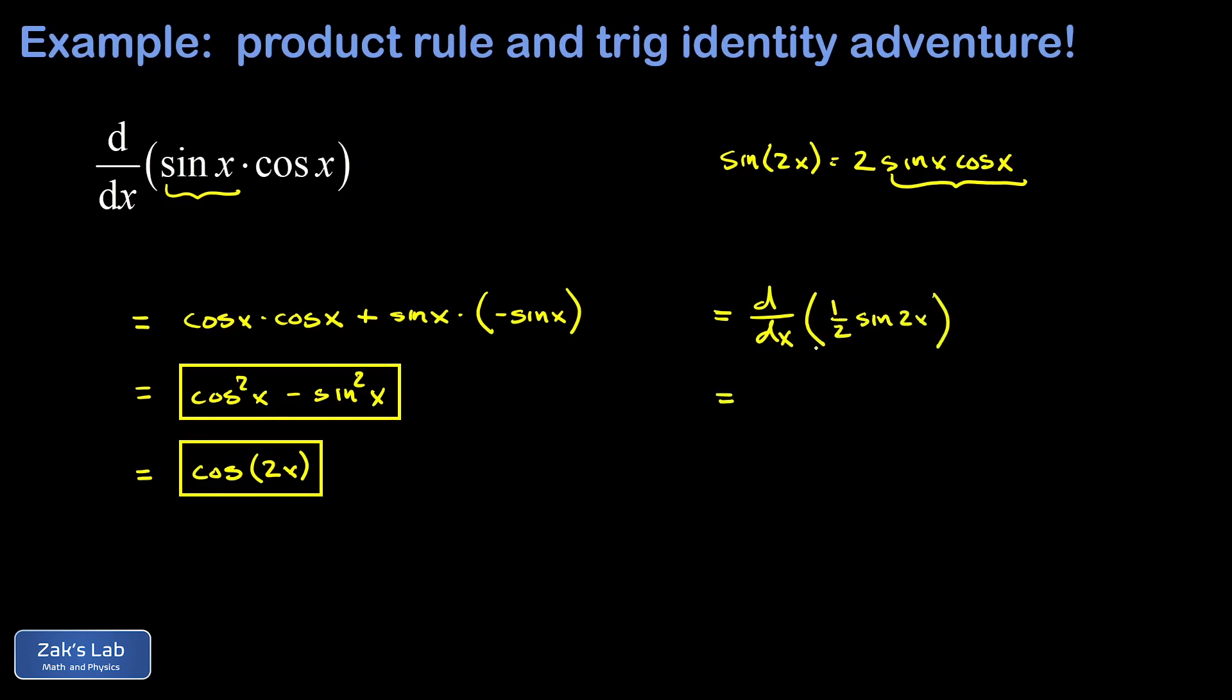Now the derivative sees right past that constant multiple of one half we'll just keep that out in front and then I have the derivative of sine of 2x. That's a function composition so I differentiate with respect to the interior function and I get cosine 2x and then I multiply by the derivative of the interior function which gives me a 2.